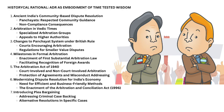Arbitration in Vedic times: even during the Vedic era, disputes were referred to specialized groups or individuals for arbitration, with the possibility of appealing to higher authorities. During British Colonial Rule, changes were made to the traditional panchayat system, allowing courts to encourage arbitration. Specific regulations were introduced to handle disputes, especially those of smaller value.